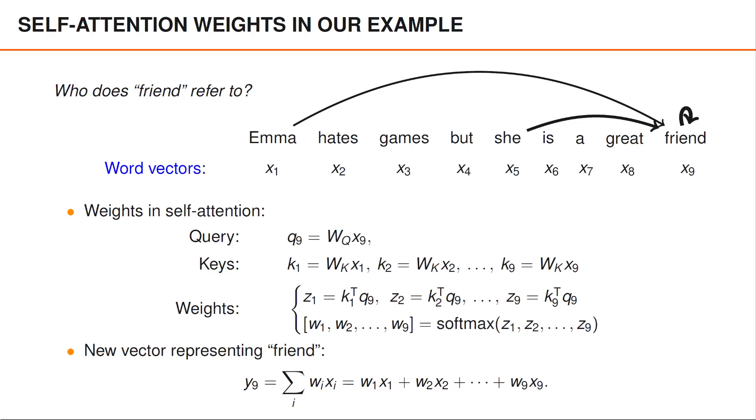We then compute the key vectors for all the words in our sentence and then obtain weights by taking the inner products between the query vector Q9 and the key vectors for all the words in our sentence.